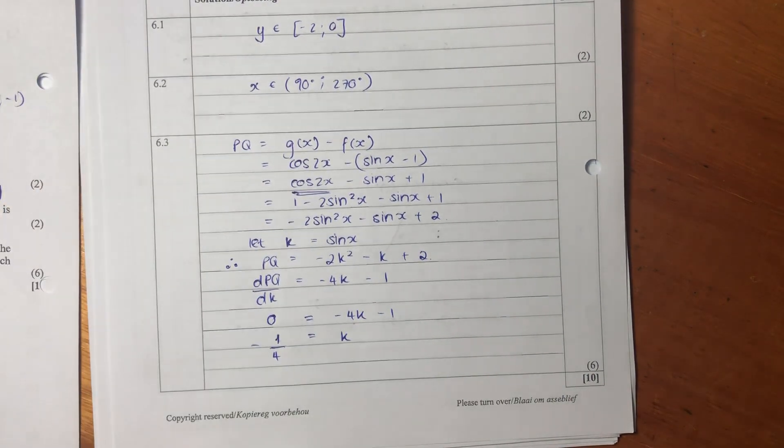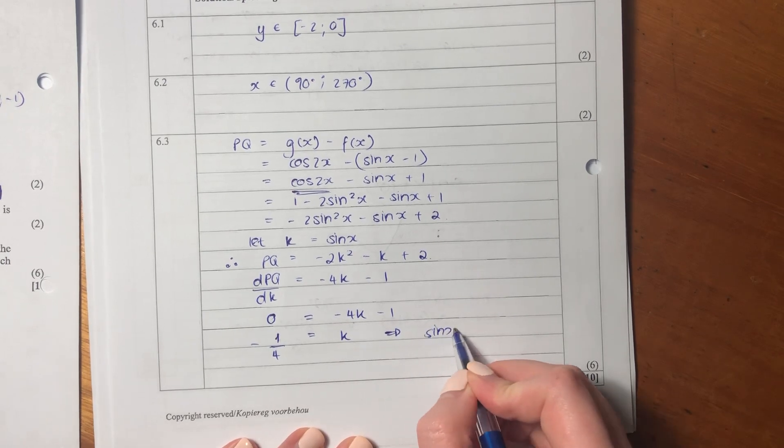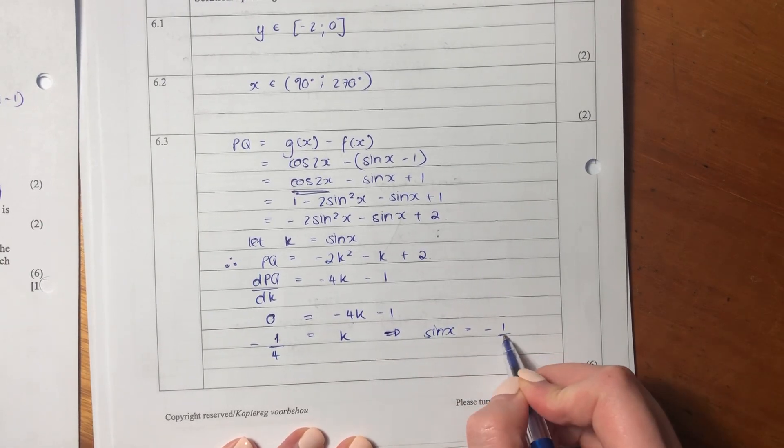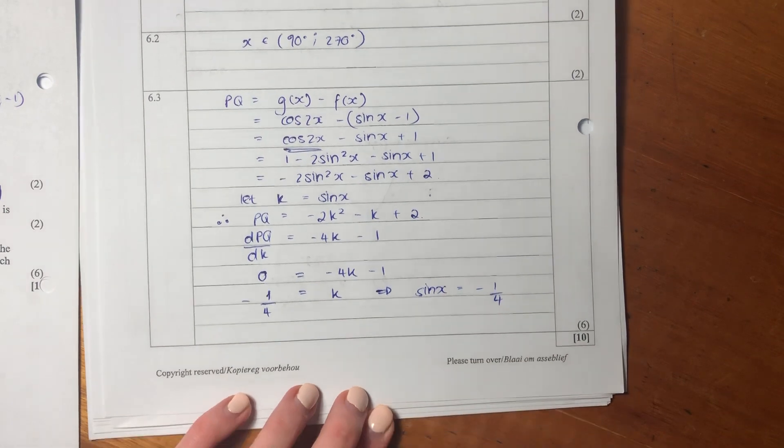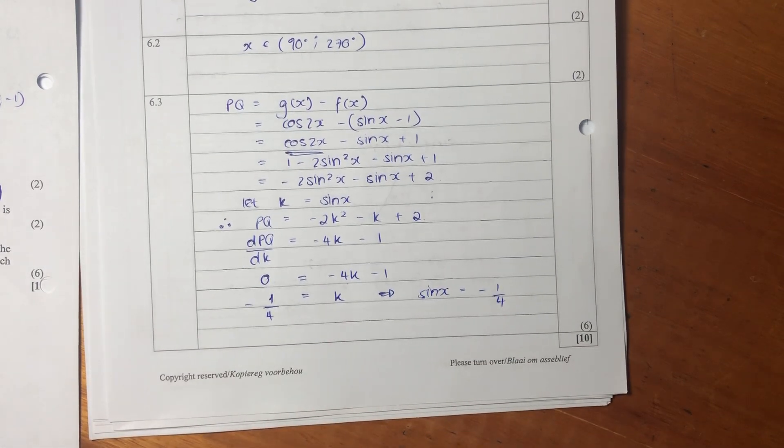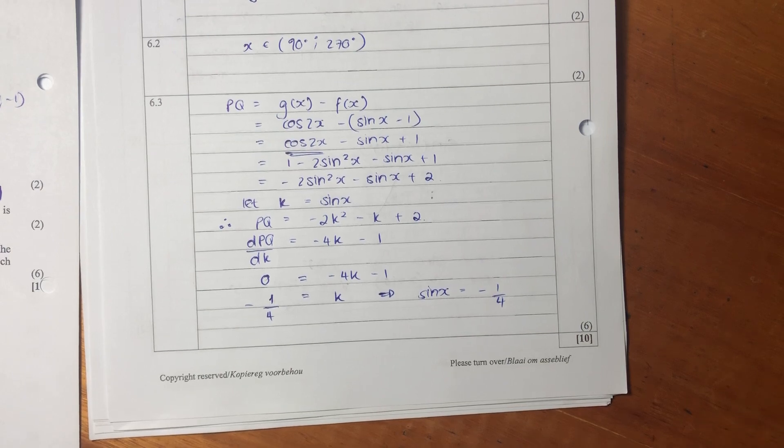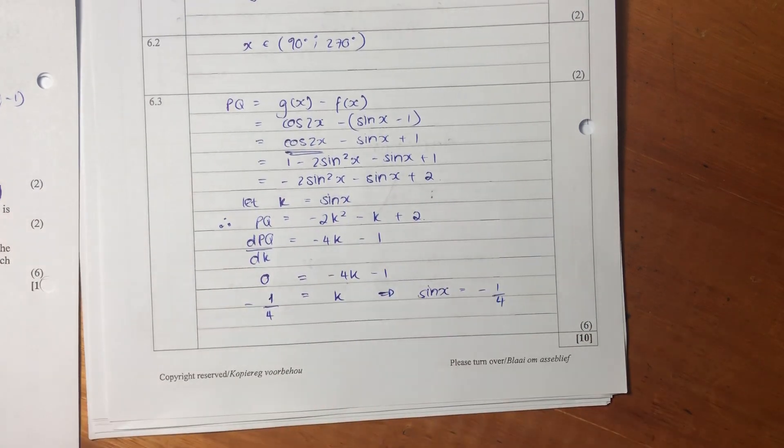So what that means is sin x is equal to negative 1 over 4. So it's important to be able to leverage both your trig knowledge, but also algebraic knowledge, in order to do these derivatives.